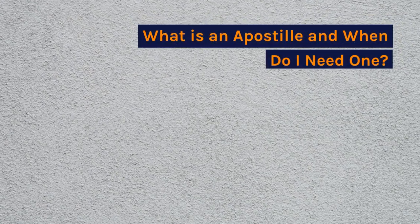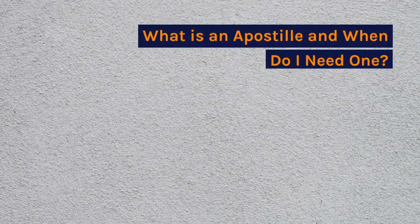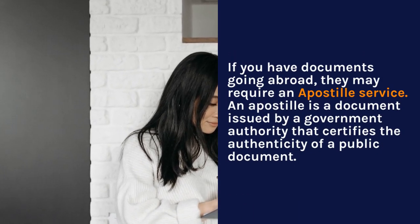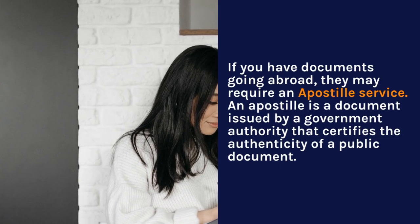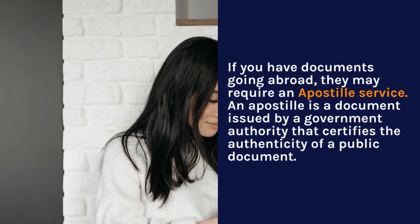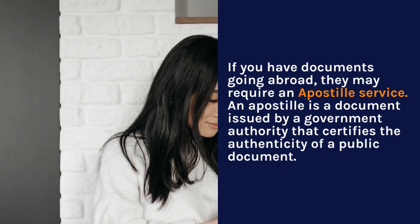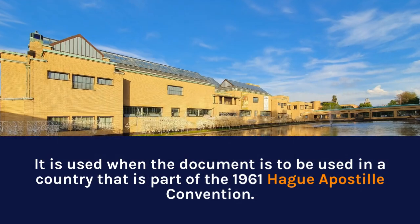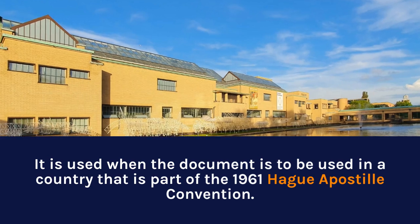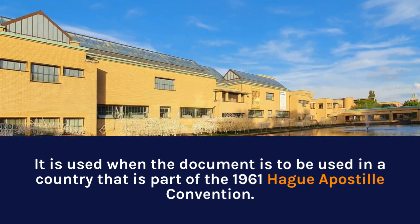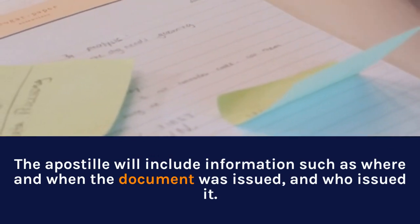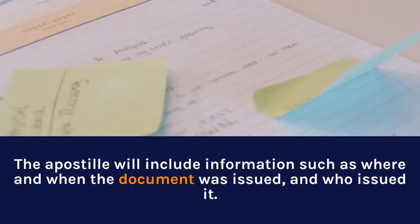What is an apostille and when do I need one? If you have documents going abroad, they may require an apostille service. An apostille is a document issued by a government authority that certifies the authenticity of a public document. It is used when the document is to be used in a country that is part of the 1961 Hague Apostille Convention. The apostille will include information such as where and when the document was issued and who issued it.